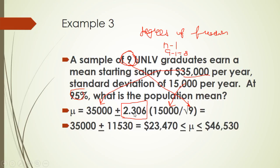Come back over here. In goes 2.306. Now we do the math. 35,000 plus or minus 2.306 times 15,000 divided by the square root of 9. We get 35,000 plus or minus 11,530, which means that all we're able to say is that the mean starting salary of UNLV students is somewhere between 23,470 and 46,530. Totally meaningless number. It's absolutely meaningless. And why is it meaningless? Because we have 9 students.